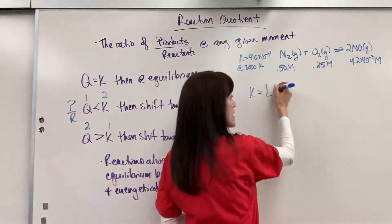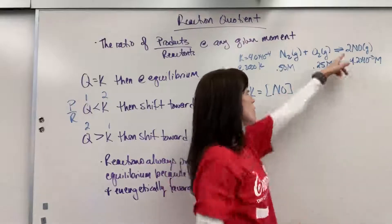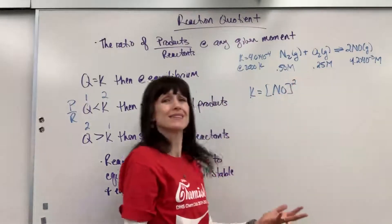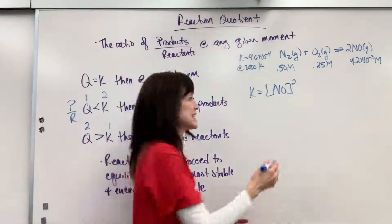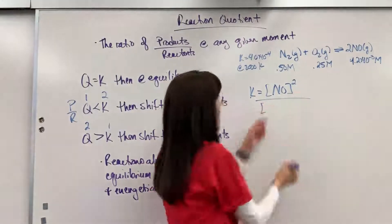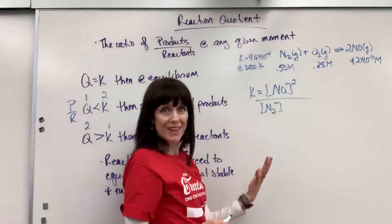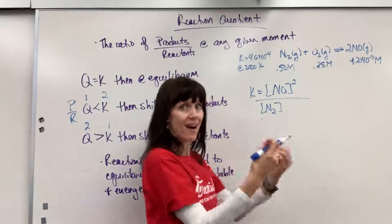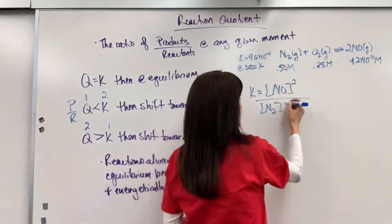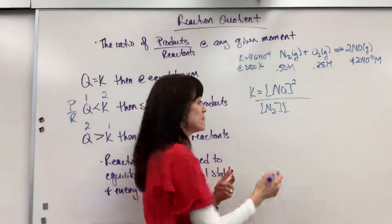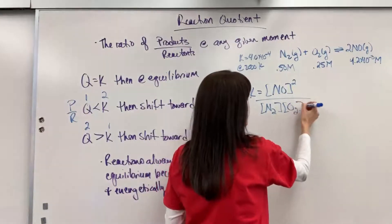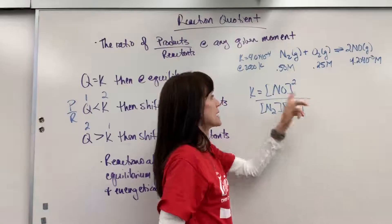So we're going to have the product, nitrogen monoxide. The coefficient is 2. The exponent is 2. Divided by our reactants, nitrogen, the coefficient is 1, so the exponent is 1. Whenever you have multiple reactants or products, you multiply them. Times O2, and that is going to also be an exponent of 1.